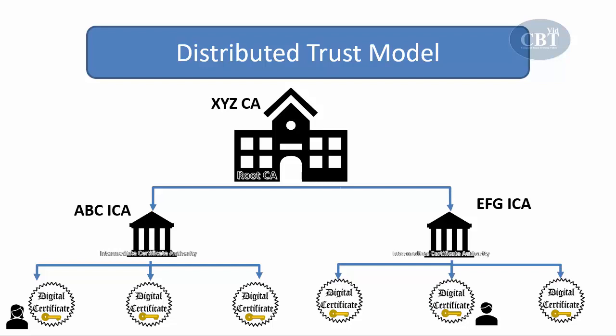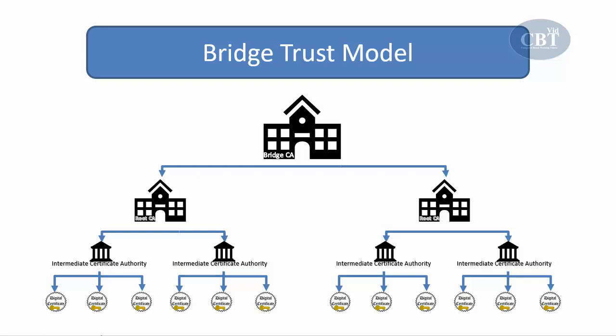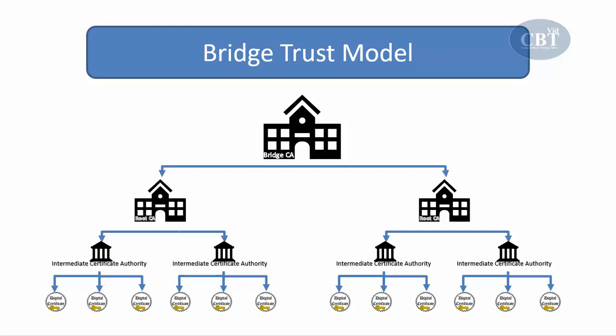This distributed trust model is the basis for most end-user digital certificates on the Internet — that's how they can verify each other's certificates. The third trust model is the bridge trust model. In this model, there is one bridge certification authority that does not issue any digital certificates. Its only responsibility is to work as a facilitator to interconnect different certification authorities, helping them verify whether another CA is trustworthy without issuing any certificates itself.